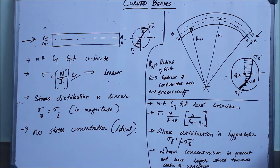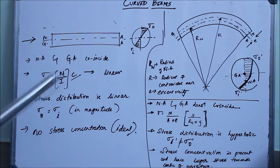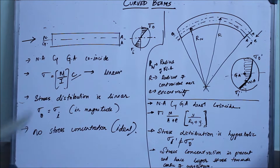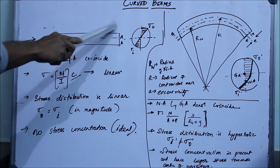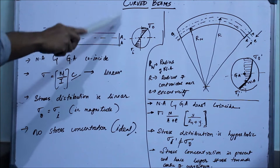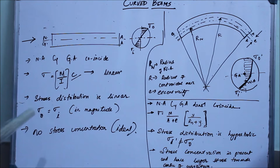First of all, what is a beam? A beam is something which is horizontal and it is subjected to transverse loads — that is, loads which are acting transversely. In the case of a column, it is a longitudinal load. So that is the main difference between a beam and a column: a beam is horizontal and subjected to transverse loads.